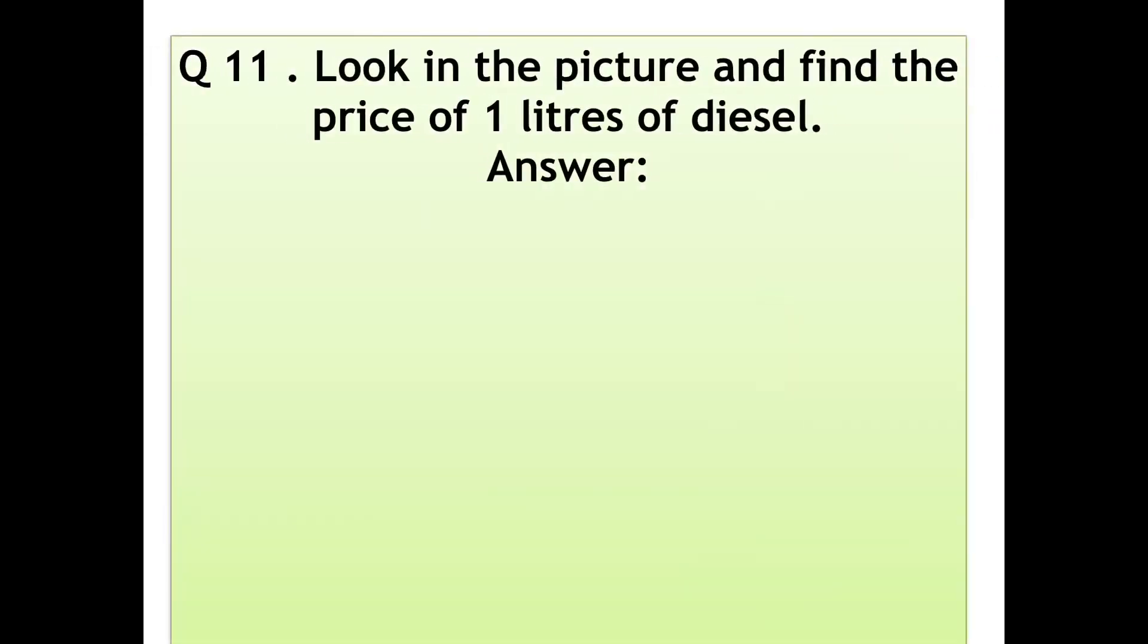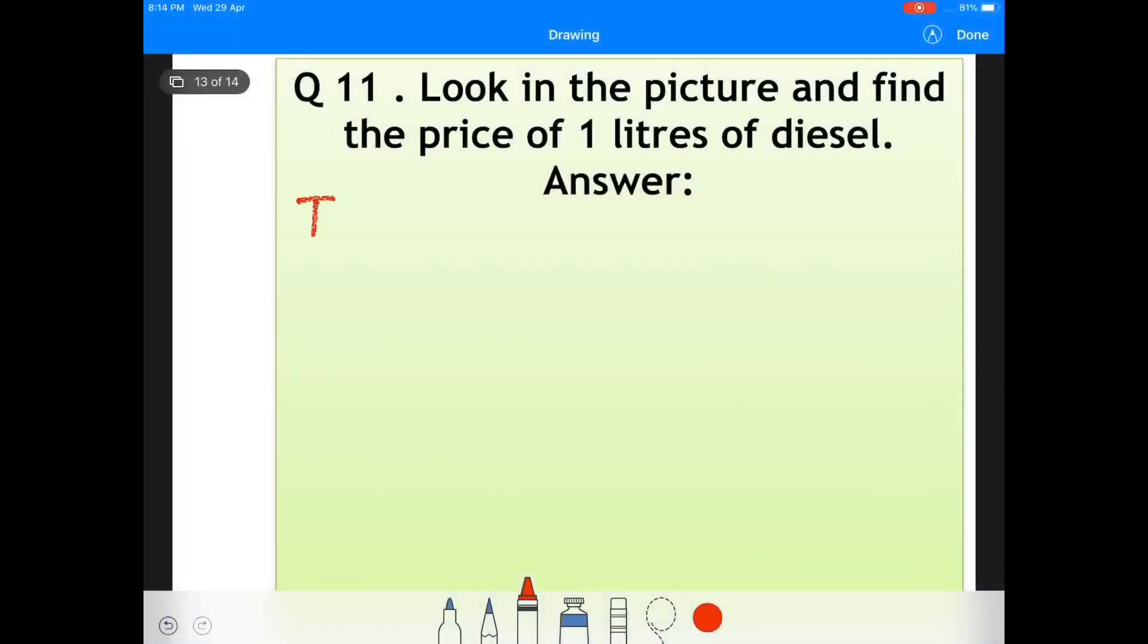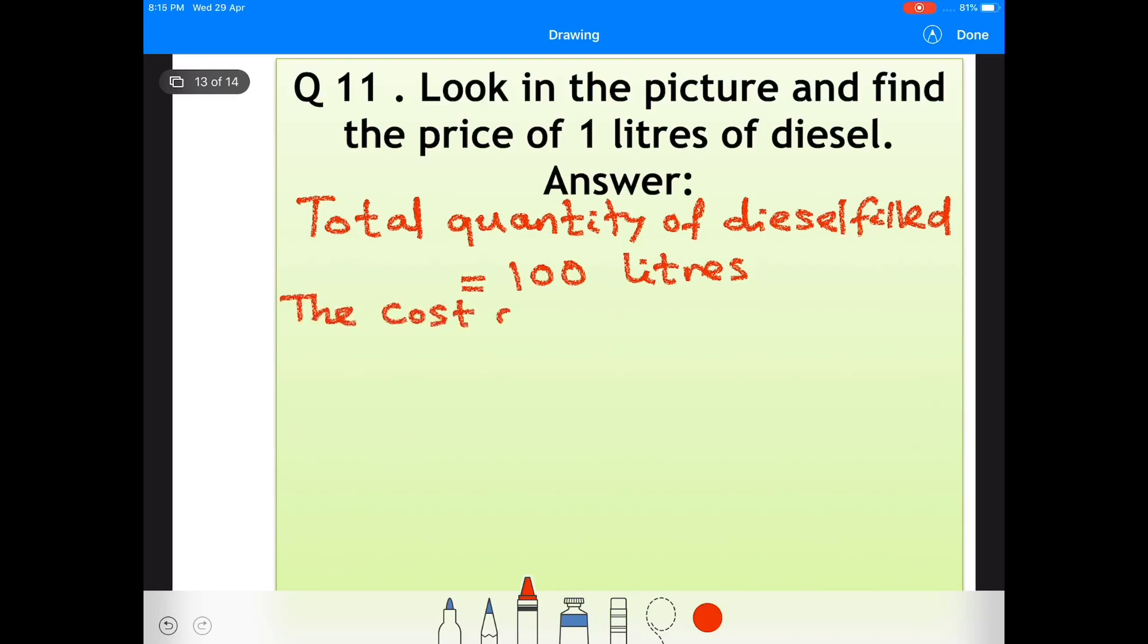Question Number 11: Look in the picture and find the price of one liter of diesel. Total quantity of diesel filled is equal to 100 liters. The cost of 100 liters of diesel is equal to rupees 3500.